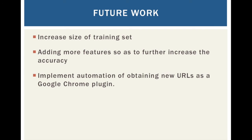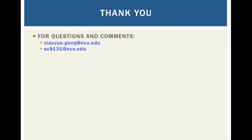We encountered a lot of problems during our project and managed to overcome them. We implemented some really interesting algorithms and learned a lot. However, we are still very aspirational about where we could take this project. We want to increase the size of the training set — there are over a couple billion URLs in the world and our training set is only 10,000. We also want to add more features to further increase accuracy, and we want to implement automation of obtaining new URLs as a Google Chrome plugin.